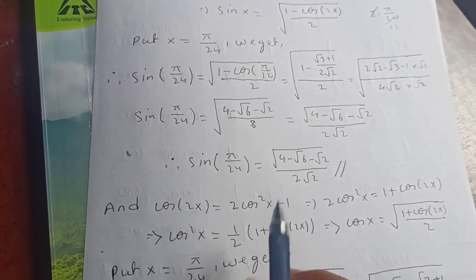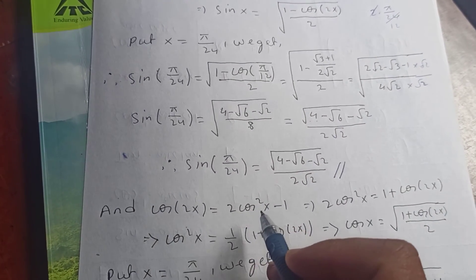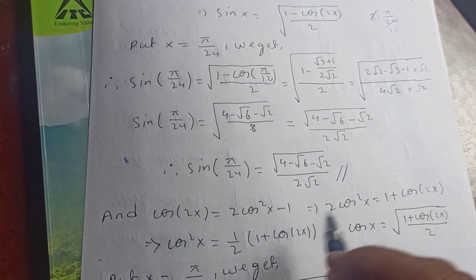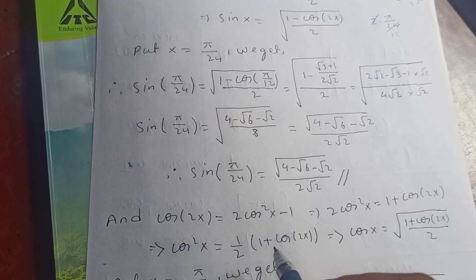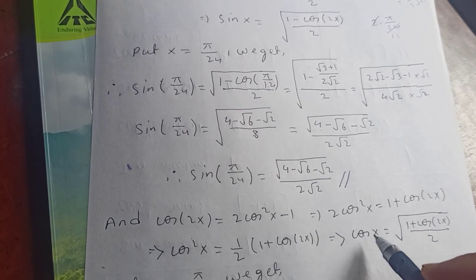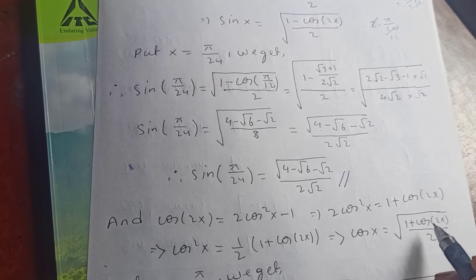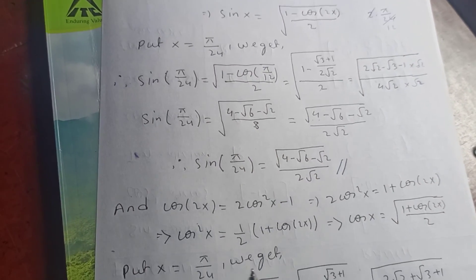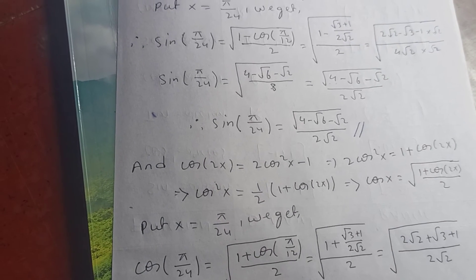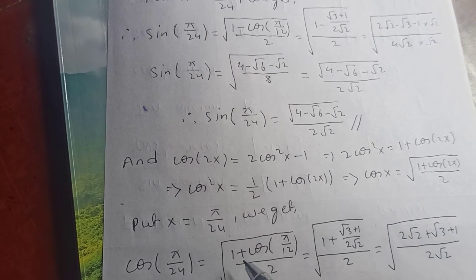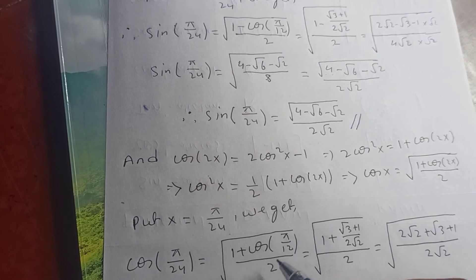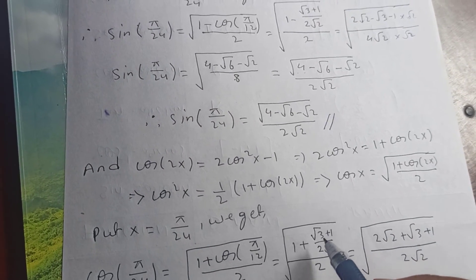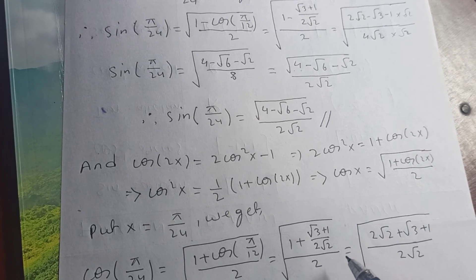For cosine, cos 2x equals 2 cos squared x minus 1, which gives 2 cos squared x equals 1 plus cos 2x, so cos squared x equals (1 plus cos 2x) over 2, and cos x equals square root of (1 plus cos 2x) over 2. Similarly, putting π over 24 in place of x, cos(π/24) equals square root of (1 plus cos(π/12)) over 2.